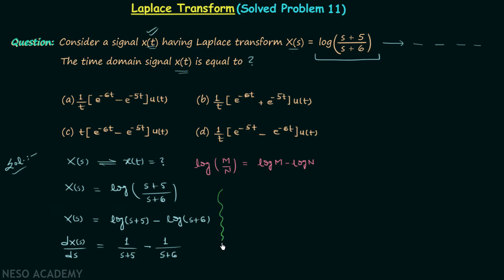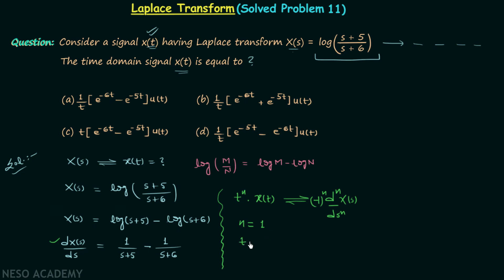Recalling the differentiation in frequency property of the Laplace transform: if you multiply t^n to a time domain signal X(t) having Laplace transform X(s), then the Laplace transform of t^n·X(t) becomes (-1)^n times the n-th derivative of X(s) with respect to s. We have already evaluated dX(s)/ds, so putting n=1, the time domain signal is t·X(t) and its Laplace transform is -dX(s)/ds = -(1/(s+5) - 1/(s+6)).